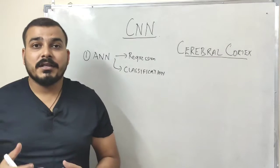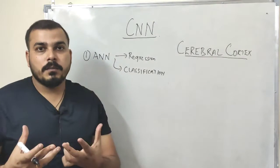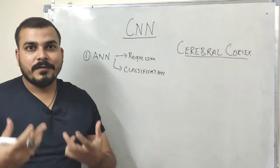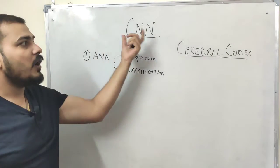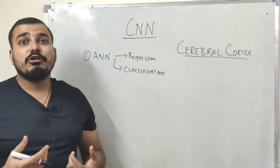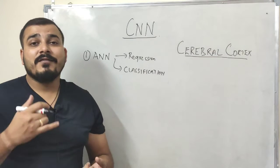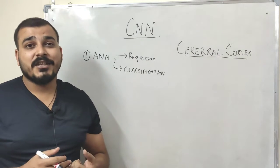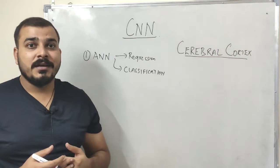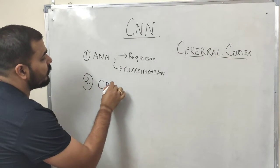I had also shown you an example of how you can run an ANN project in Google Colab. Now remember that whenever your inputs are in the form of images or video frames, at that time you should prefer using convolutional neural networks. With CNN you'll be able to do a lot of things like object detection, face classification, object classification, object recognition, and many more.